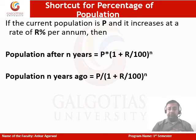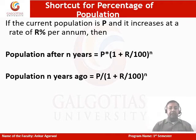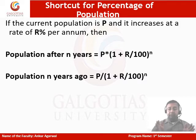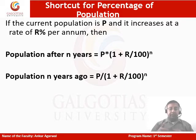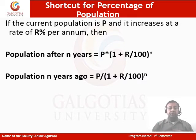There are some shortcuts for percentage. In many examination questions, they ask about population. If the current population is P and it increases at a rate of r% per year, then population after n years = P × (1 + r/100)^n. If you want to find the population n years ago, it is P ÷ (1 + r/100)^n. So if you are going into the future, do multiplication; if you are going into the past, do division.